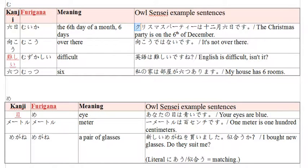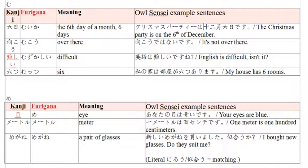And there is the kurisumasu - that's Christmas, and it's in katakana obviously. And then paati for party. So Christmas party is the 12th month, 6th day. The Christmas party is on the 6th of December.